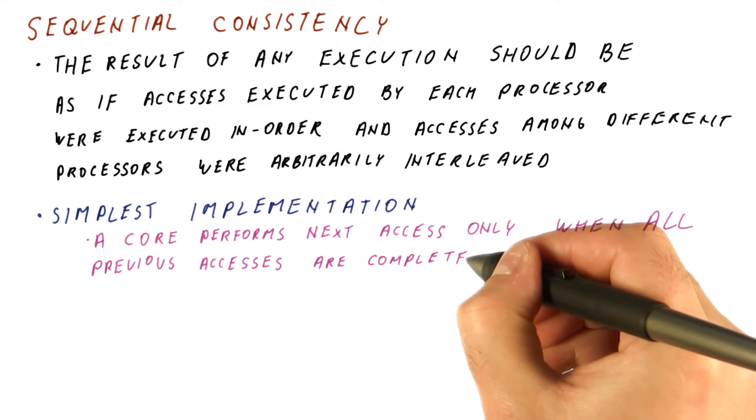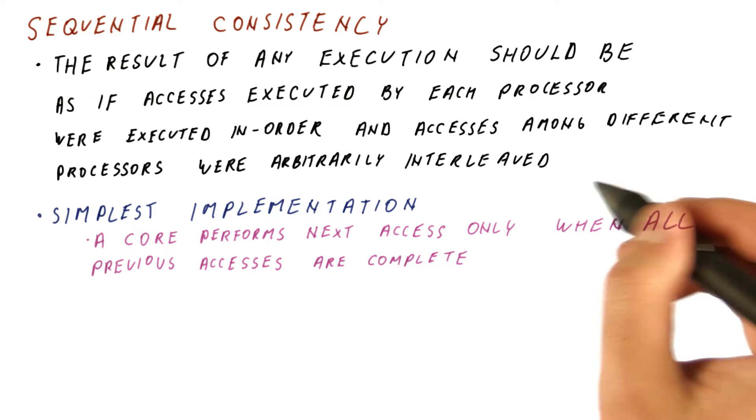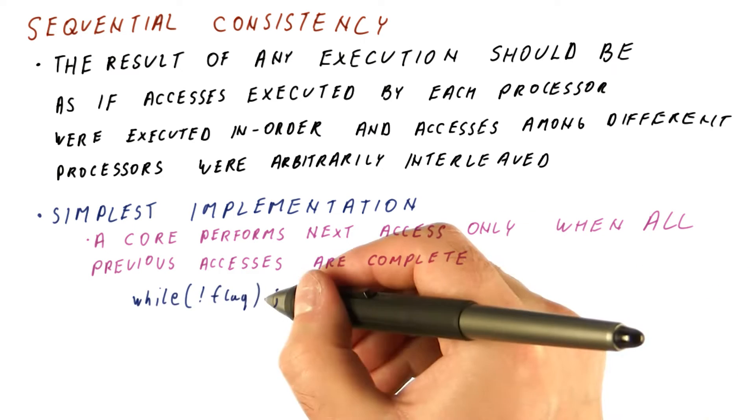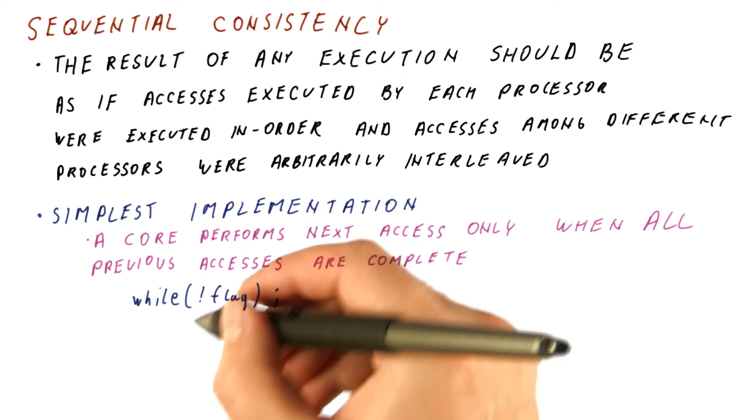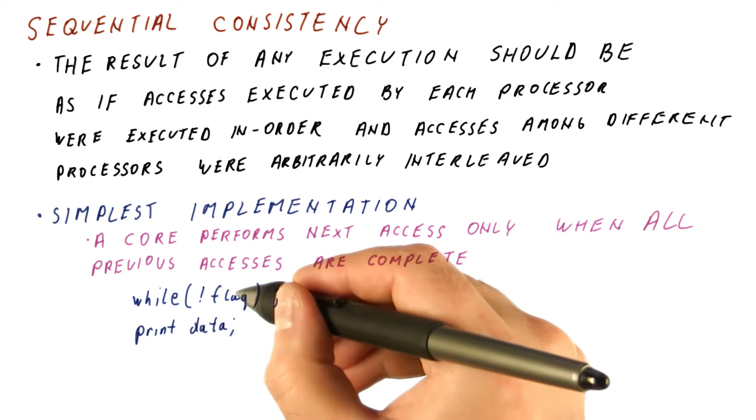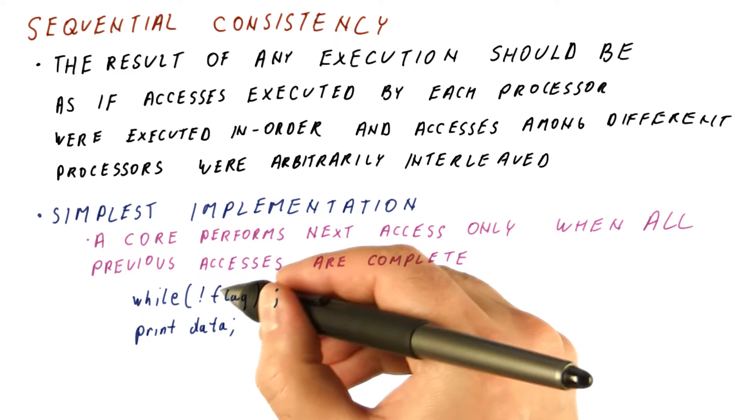A core processor performs the next memory access only when all previous accesses are complete. So in the code that waits for a flag to be set and then prints the data, we cannot read the data until the read of the flag has completed.